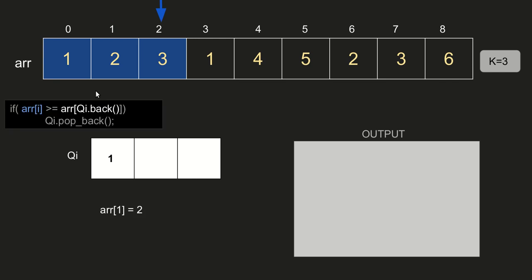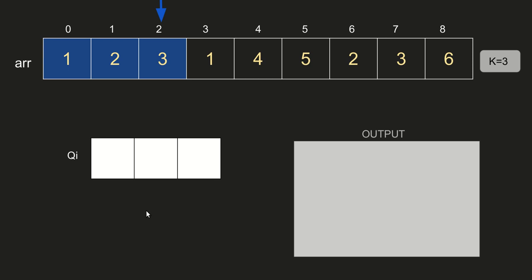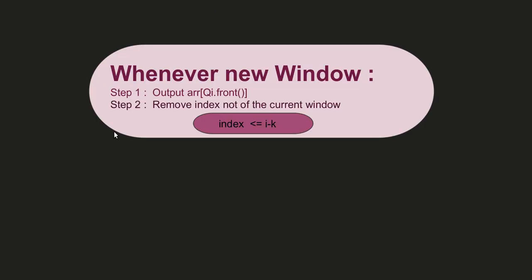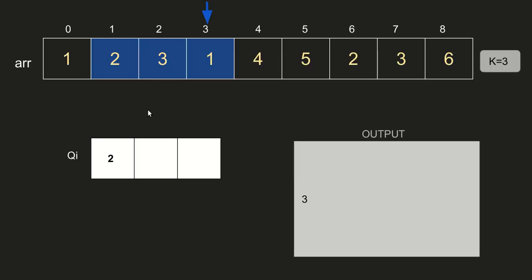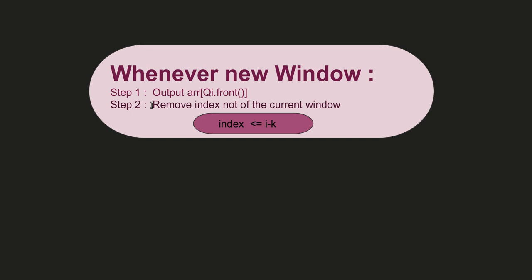The window now shifts. Whenever the window shifts, we output array[deque.front()] — which is array[2]=3. Then we remove all indices in the deque that are not in the current window; index 2 is in the current window so we move on. Next, we check if array[i]=1 is greater than or equal to array[deque.back()]=array[2]=3. Since 1 is not greater than 3, we do not pop; we insert index 3 into the deque.